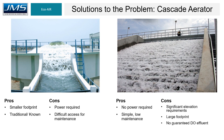On the left, the vertical tray style cascade aerator offers a smaller footprint. However, its cons include a pump being required — which means ongoing energy costs — as well as difficult access for maintenance. On the right, the traditional step-down cascade aerator requires no power and is simple with fairly low maintenance. However, its cons include the requirement for a significant elevation drop, a large footprint, and most importantly, it does not guarantee a DO effluent at the outfall.